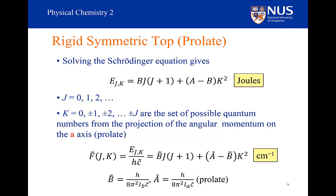It has to be said that there isn't a unique choice of how we define these quantum numbers. This choice is the one that makes the most sense because it makes the energy equation look the simplest. But you could solve this with a different definition of the three quantum numbers and calculate energy levels with exactly the same numerical result.